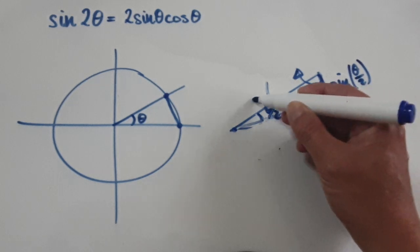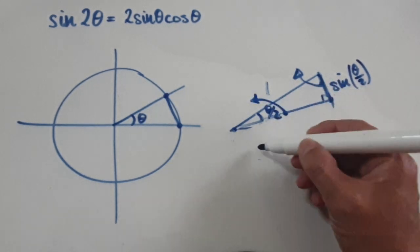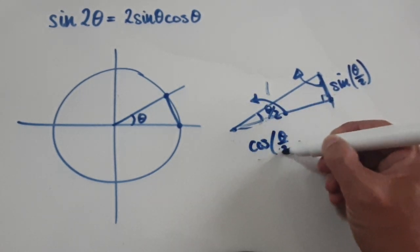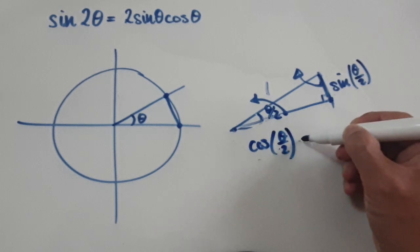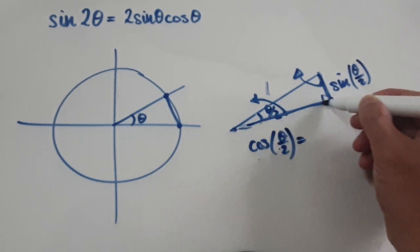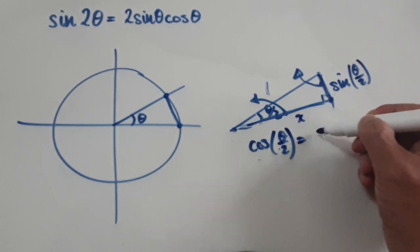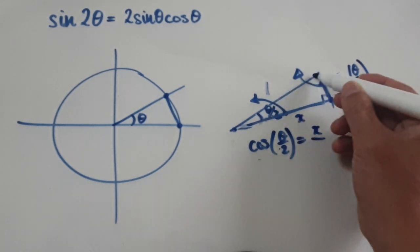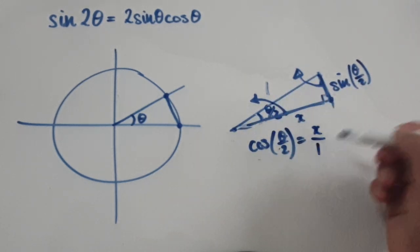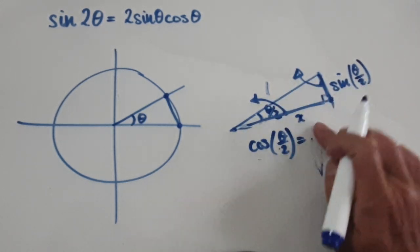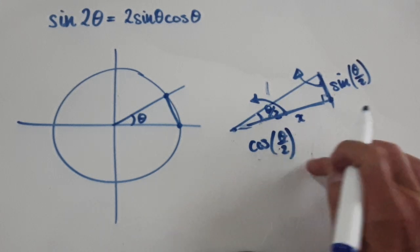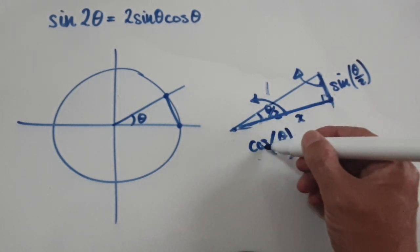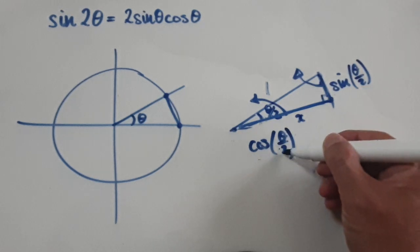Now let's work out this other length. That would use cosine: cos of the angle equals this length over 1, which is just x. So this length here is cos(theta/2).